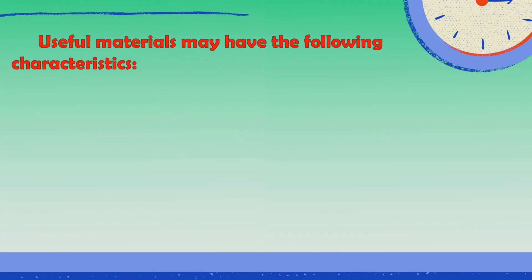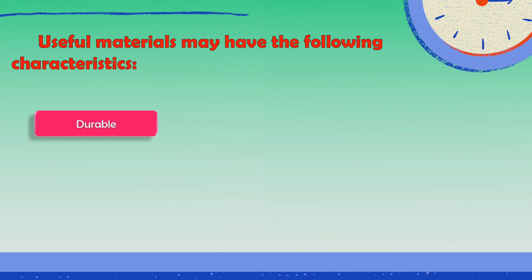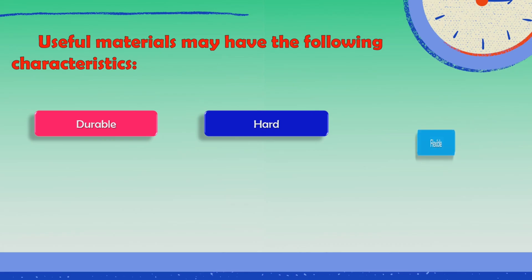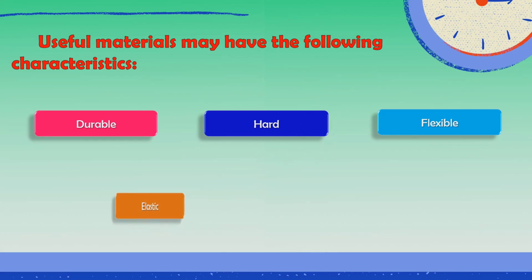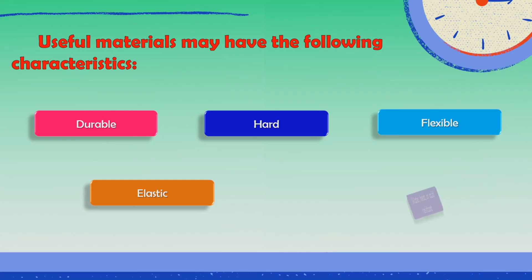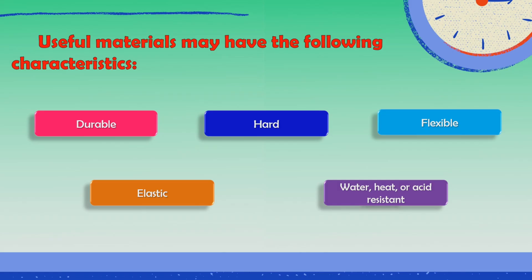Useful materials may have the following characteristics. First, durable — they can exist for a long time without significant deterioration. Next, hard or firm. Flexible — they can be bent without breaking. Elastic — they can return to their original size and shape after being stretched. And they are water, heat, or acid resistant.